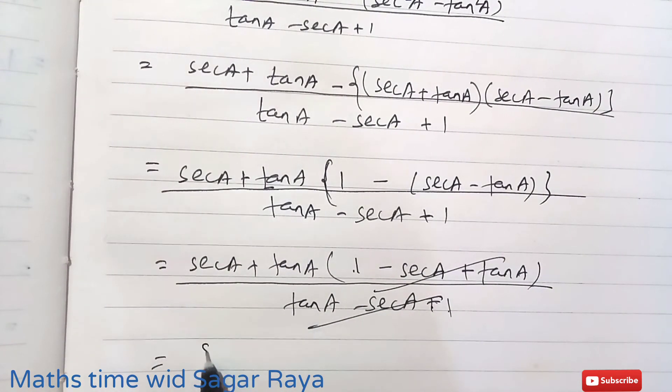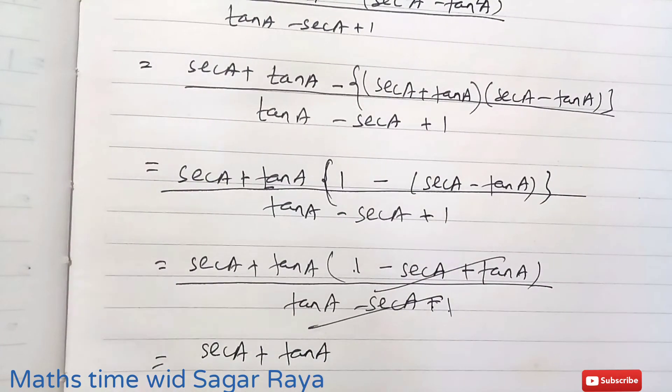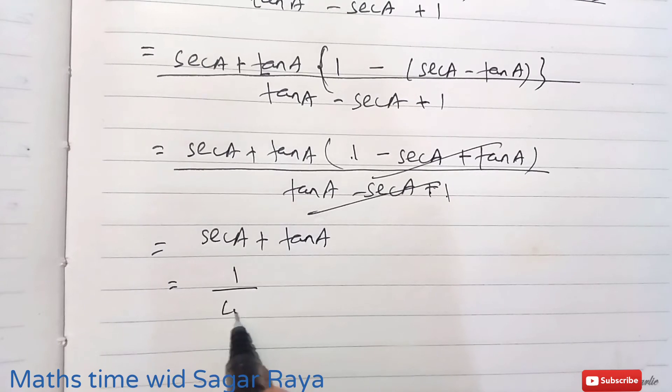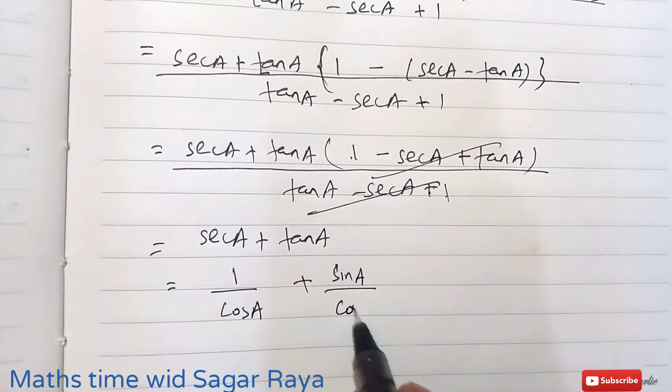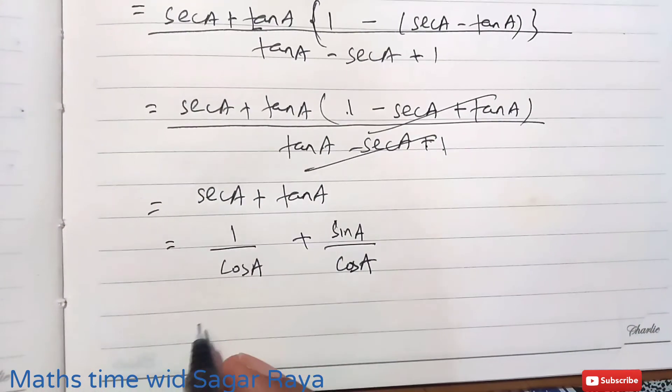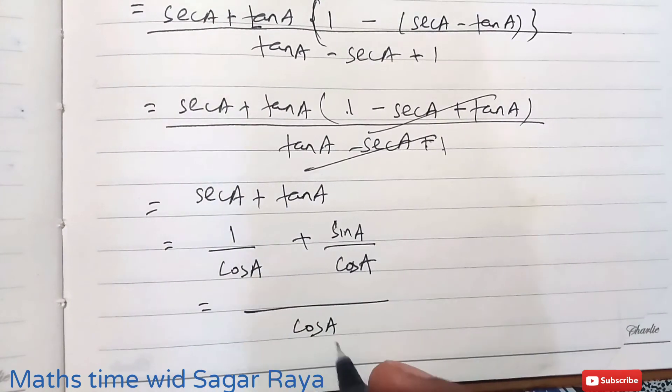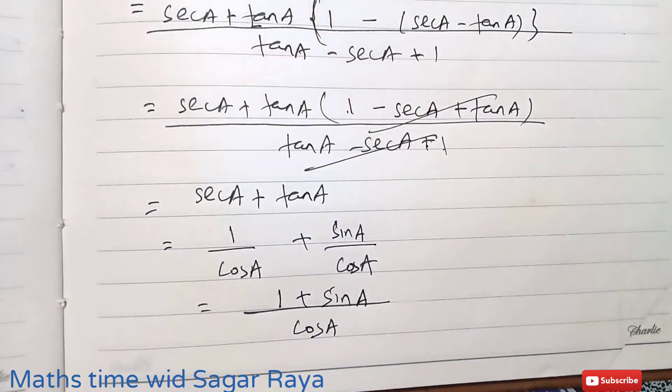What remains here is secA + tanA. So secA you can just change into 1/cosA, and tanA you can change into sinA/cosA. If you take LCM, the LCM of cosA and cosA will be cosA, and here remains 1 + sinA.